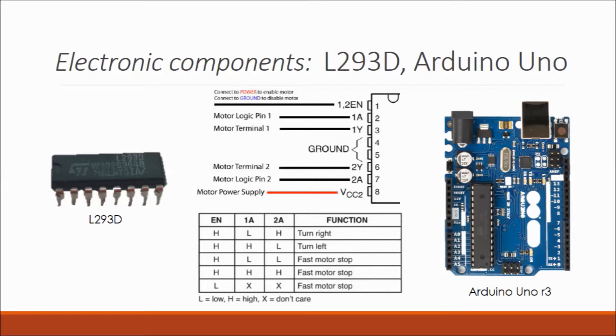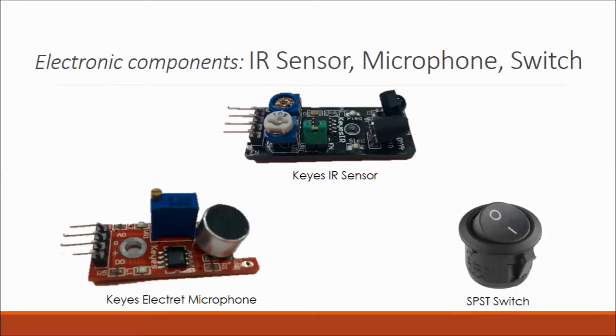The L293D IC contains two H-bridges. The MOSFET gates of the IC are controlled using an Arduino Uno. A combined IR transmitter and sensor was used for obstacle avoidance functionality. A microphone allowed for sound-based control of the robot.